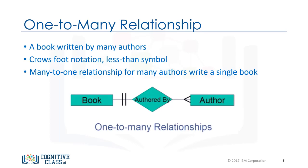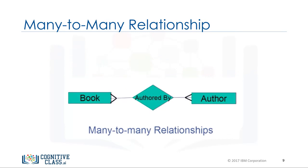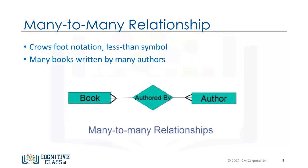This could also be called a many-to-one relationship, in that many authors write a single book. To represent many authors writing many books, use the greater than and less than symbols on either side of the relationship set. This is called a many-to-many relationship. Each entity in the entity set is participating in more than one relationship — many books being written by many authors, or many authors writing many books.